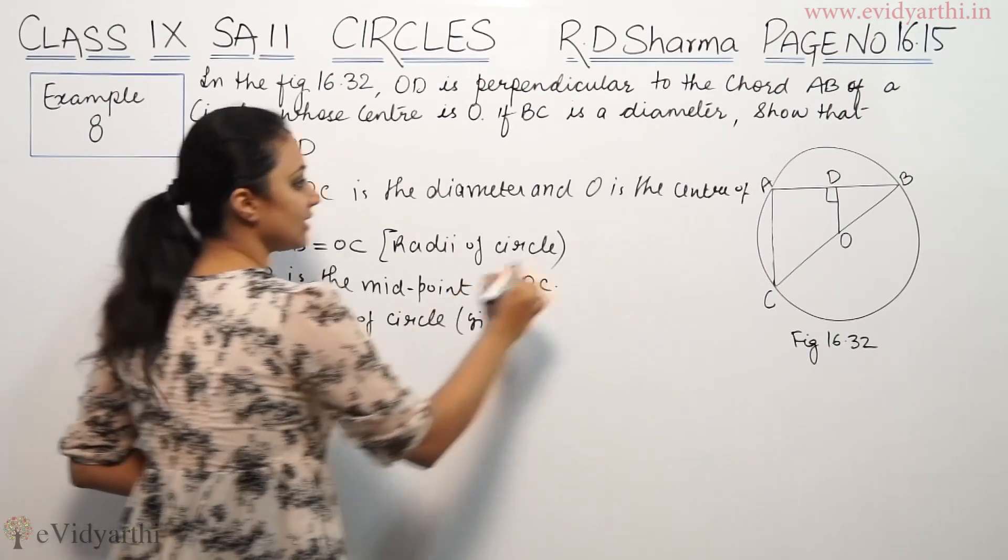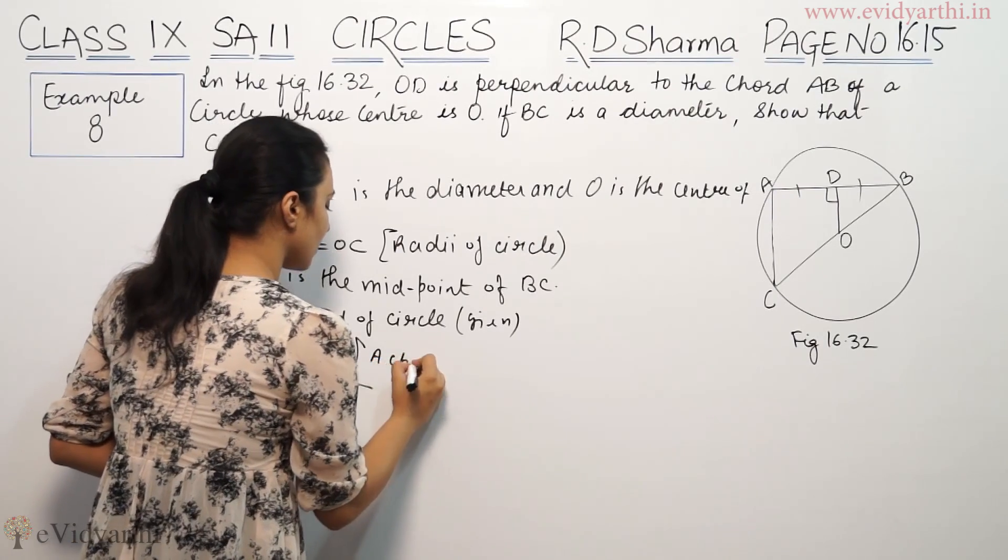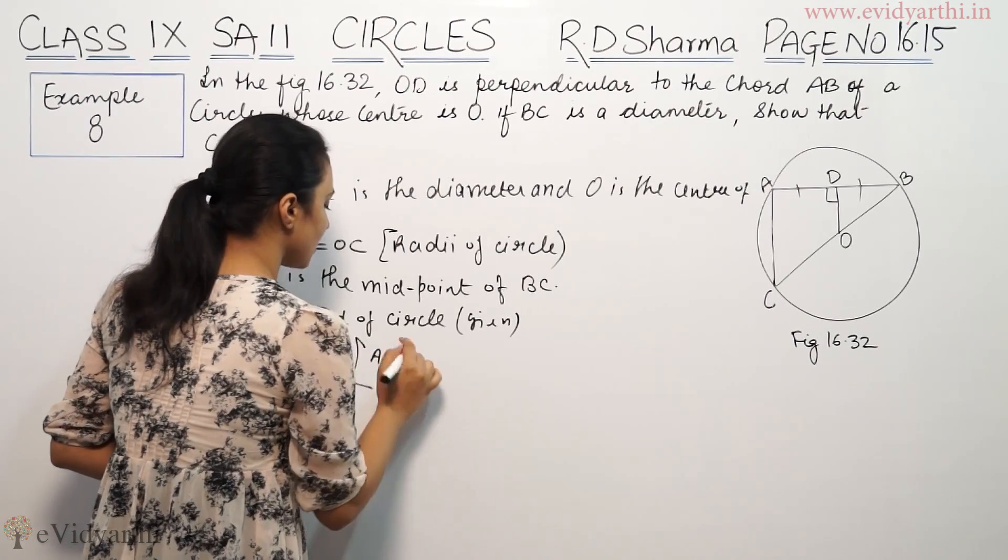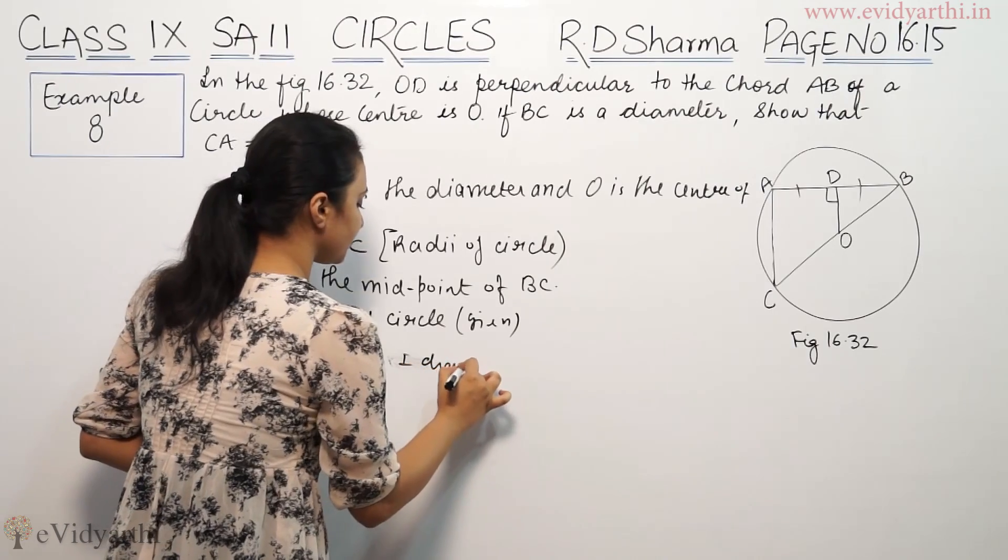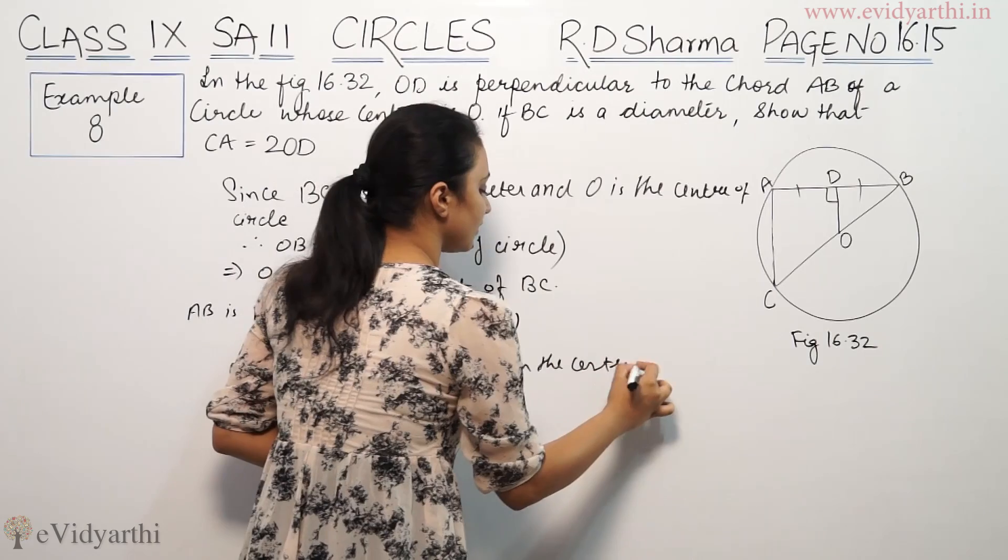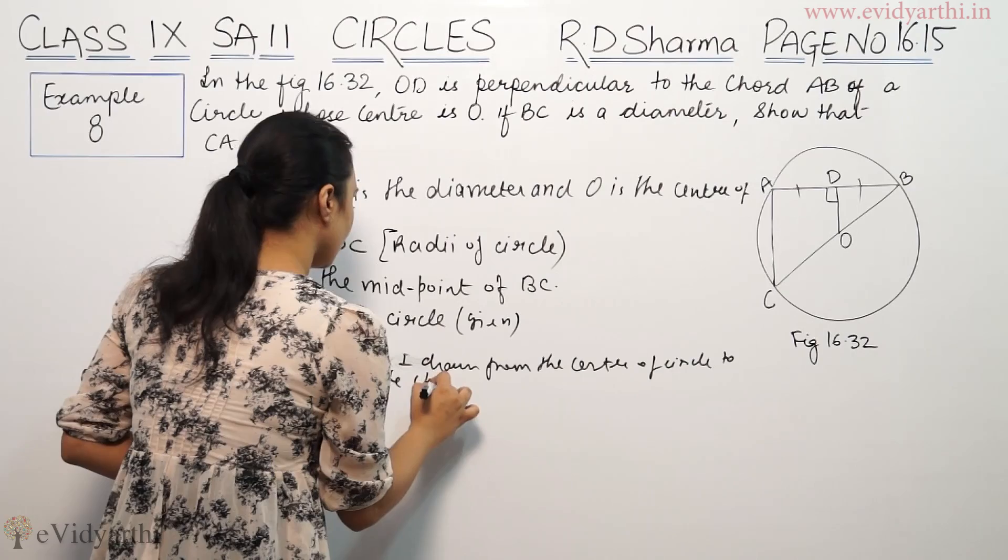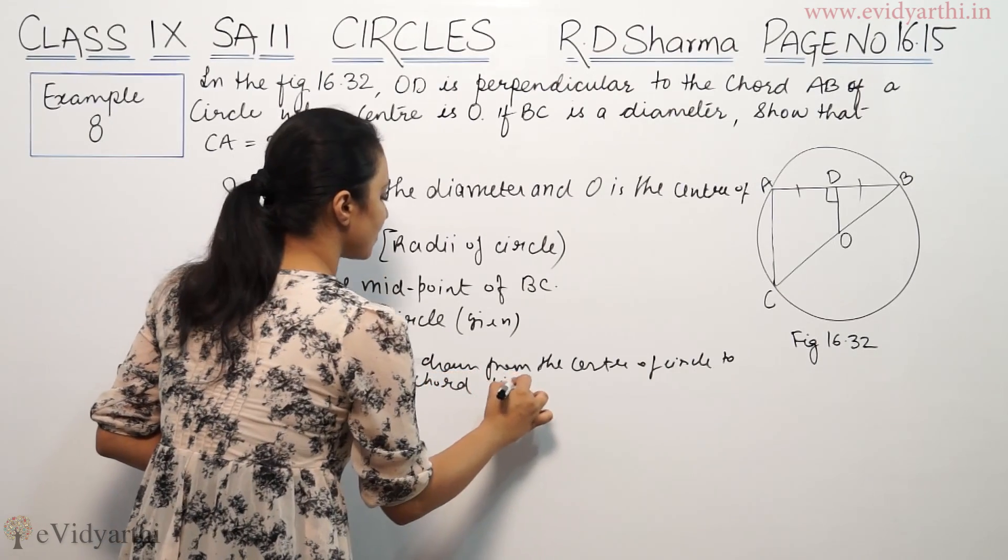A perpendicular drawn from the center of circle to the chord bisects the chord.